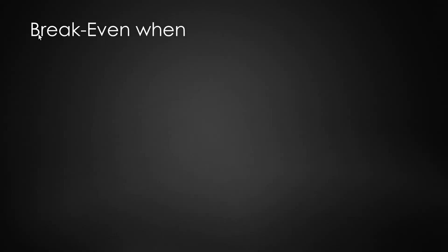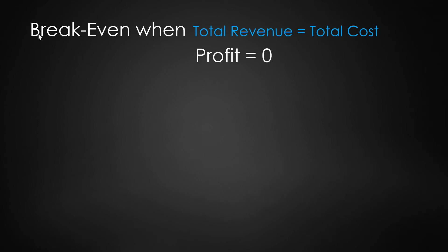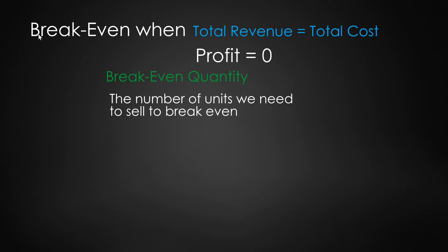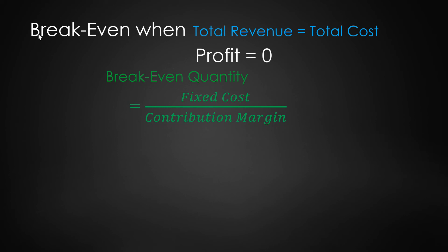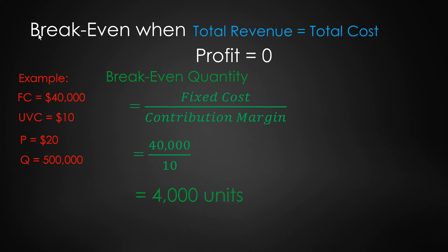Now let's look at break-even formulas. The break-even point is where total revenue equals total cost, so profit is zero — you're not making any profit, but you're not losing money either. To calculate the break-even quantity — the number of units you need to sell to break even — the formula is fixed costs divided by the contribution margin. For our example, that's $40,000 divided by 10, which equals 4,000 units.